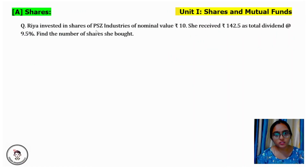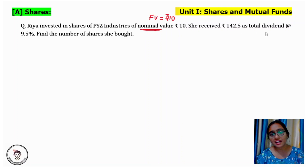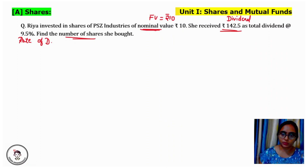Ria invested in shares of TSZ Industries of nominal value Rs.10 — here nominal value means face value, so face value is given as Rs.10. She received Rs.142.5 as total dividend at 9.5%, meaning 9.5 is the given rate of dividend. The question asked is: find the number of shares she bought, i.e., calculate the total number of shares. Given: dividend, face value, and rate of dividend.